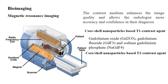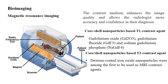The core-shell nanoparticle-based T2 contrast agent permits negative contrast enhancement, producing darker images of the region of interest. In T2 contrast, water appears in brighter contrast and fat in darker contrast. One of the very first core-shell-based T2 contrast agents is a dextran-coated iron oxide nanoparticle, which was the first used as an MRI contrast agent.